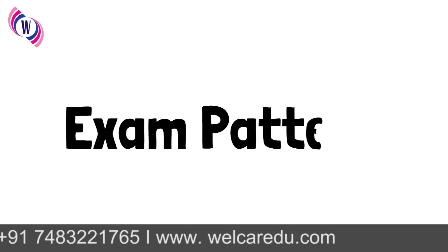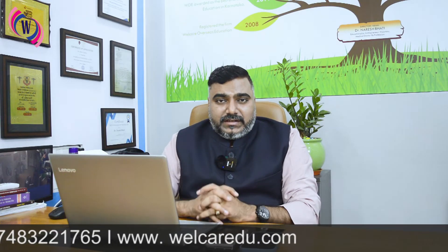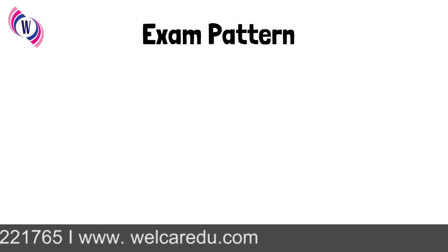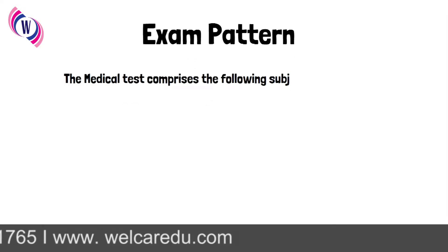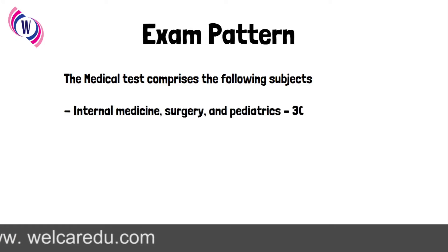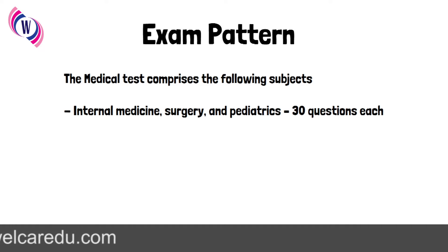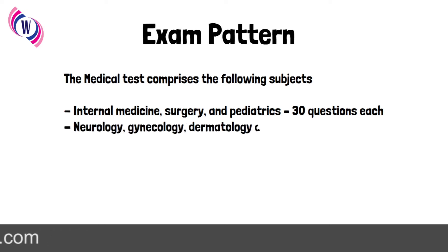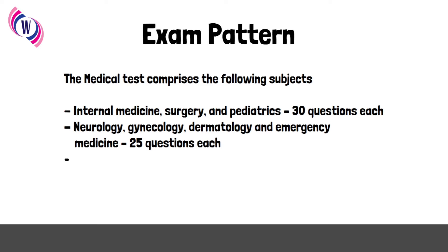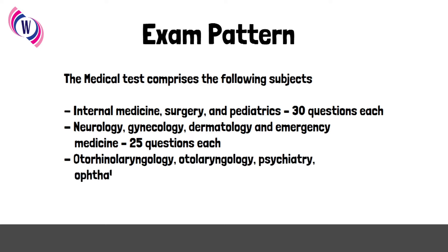What is the exam pattern? How does this exam happen at the medical council in the Austrian chambers? The medical test comprises the following subjects: internal medicine, surgery, and pediatrics — these three topics contain 30 questions each. Neurology, gynecology, dermatology, and emergency medicine contain 25 questions each. Otolaryngology, psychiatry, and ophthalmology contain 20 questions each. This is how the exam pattern works and how they assess the results.